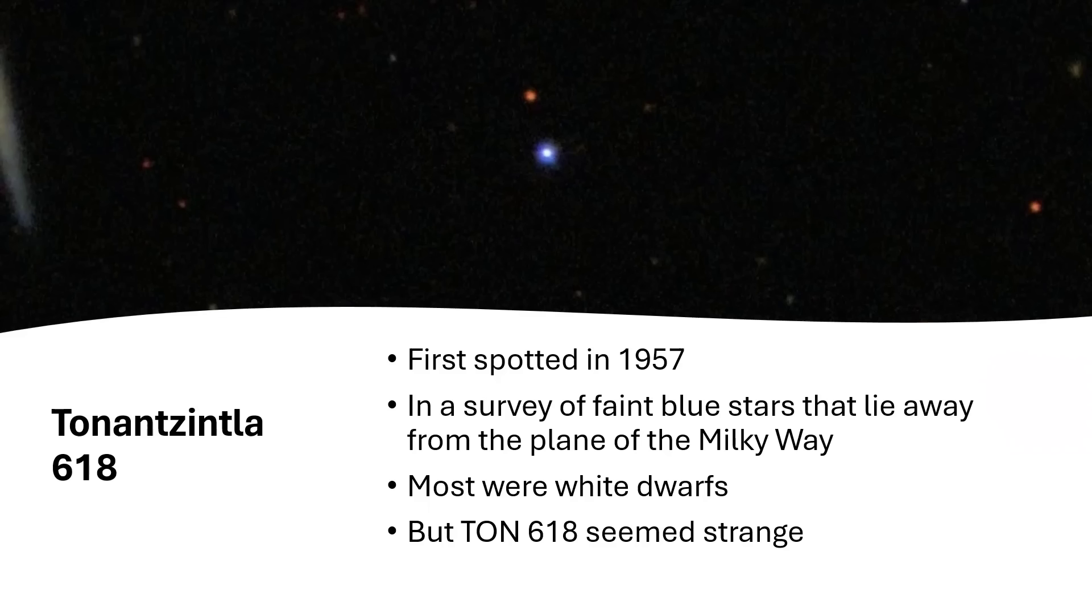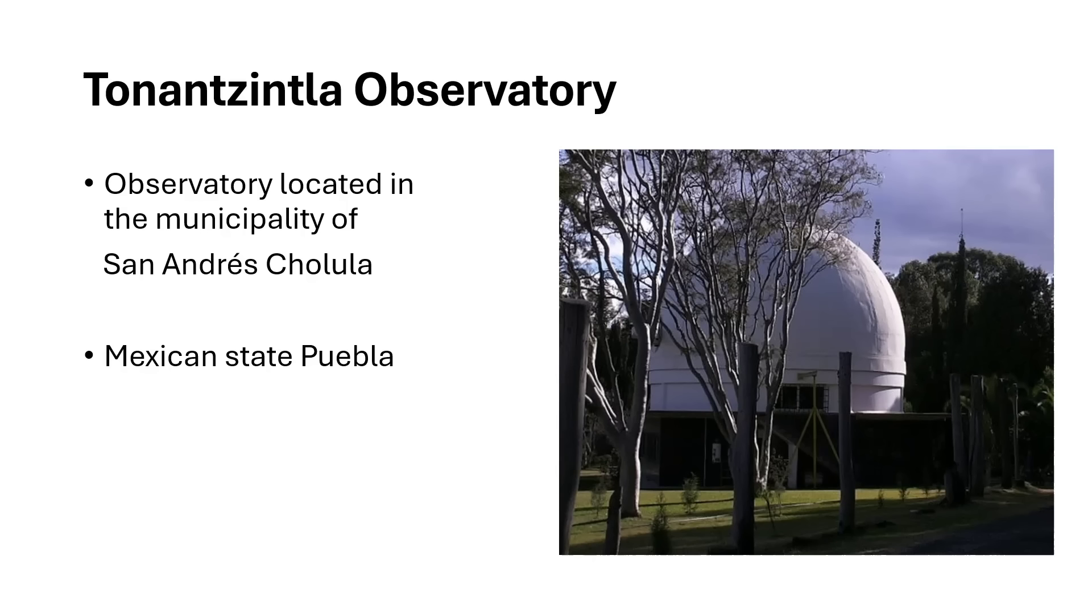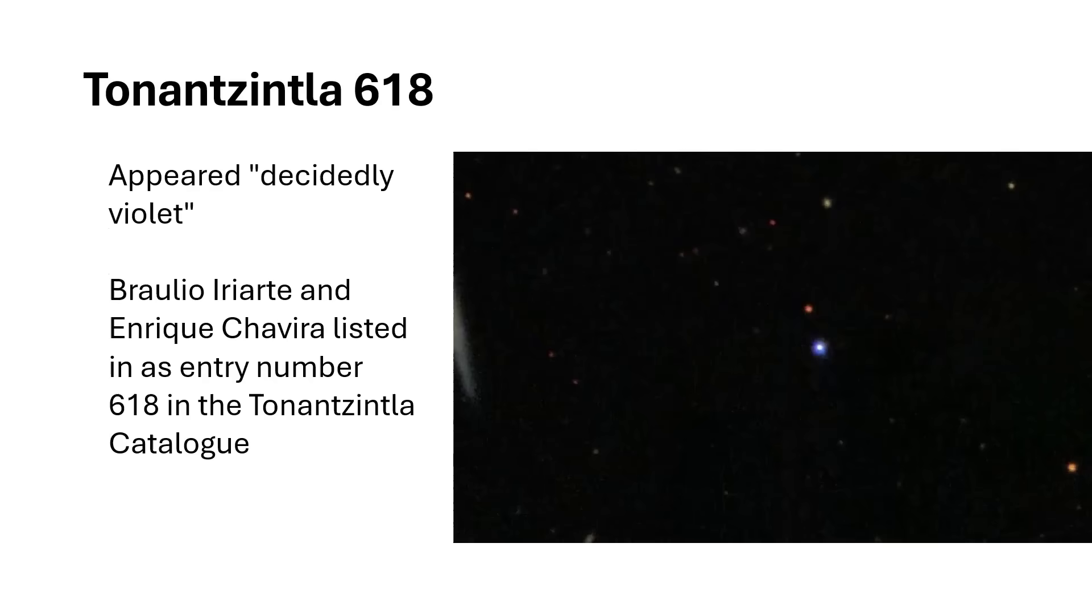It seemed a bit odd. A photograph at the top there shows the bluish-white dot in the center and that slightly separated red dot, which is just another star in the line of sight. The Tonantzintla Observatory in Mexico was carrying out this survey, and when they found TON 618, they noticed it was much more blue, decidedly violet was the description, suggesting an even more elevated temperature than the other white dwarf stars they were cataloguing.